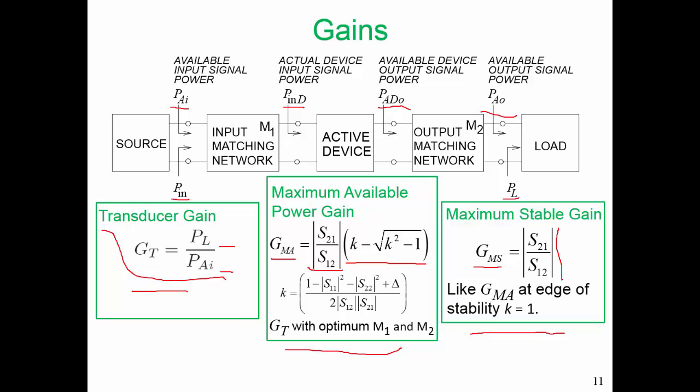Now we can achieve any gain possible if we use feedback, but without feedback these metrics give us a very good idea of how we can go about doing design. Design using feedback is a little bit more complex. Sometimes it must be used, especially to make sure we have flat gain across the bandwidth. But with this particular transistor, we can achieve our specifications without using feedback.